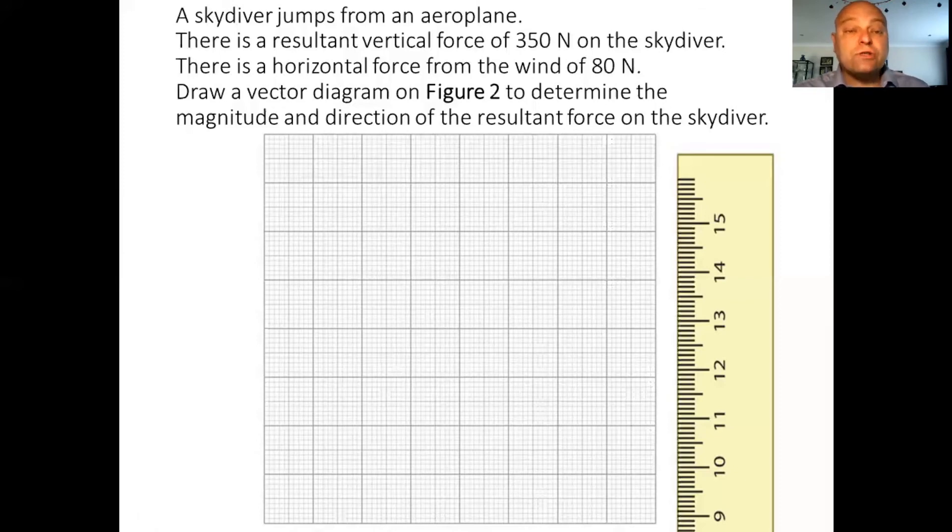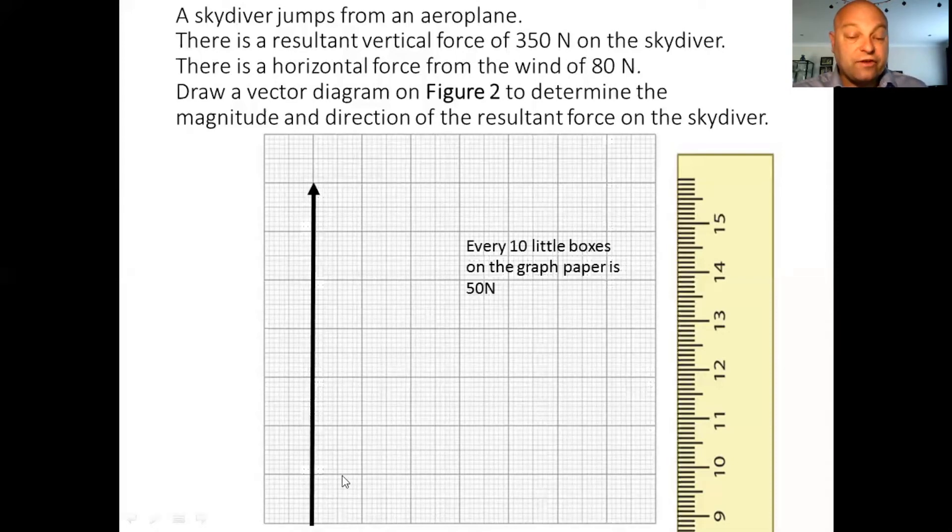There is a resultant vertical force of 350 Newtons on the skydiver. So let's draw the arrow in vertically. Now, obviously, I don't have 350 little boxes on my graph. So what I need to do is have some kind of scale. And what I've said is every 10 little boxes is going to represent 50 Newtons. So the dark lines are the 10 box lines. So 0, 50, 100, 150, 200, 250, 300, 350 Newtons. Horizontal force from the wind of 80 Newtons. I'm going to draw that on the bottom. So there's 50 Newtons at that line there. Another six little boxes makes it up to 80.